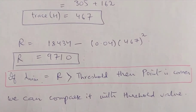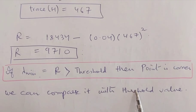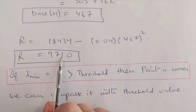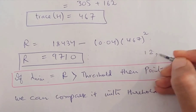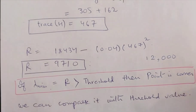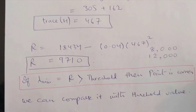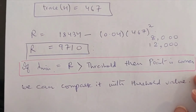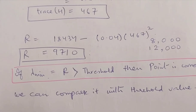If R is higher than the threshold, the point is a corner. In this question we were not given a threshold value. If we were given a threshold of 12,000, we would say R is smaller than threshold, so it is not a corner. If the threshold were 8,000, then R = 9,710 is higher than the threshold, so it is a corner. Based on this R value, we can identify whether the given pixel is a corner or not.